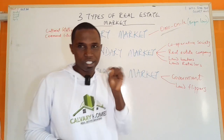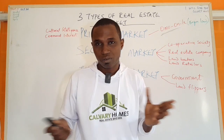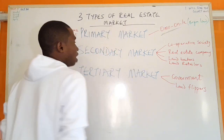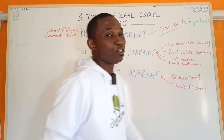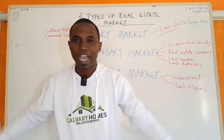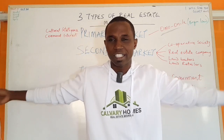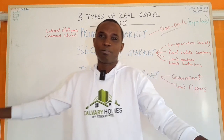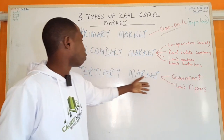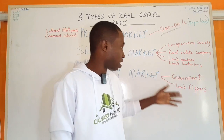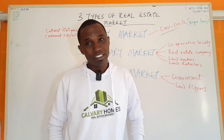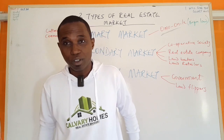So land bankers and land retailers — that's when you are buying from the secondary markets. The last market is the tertiary market. That's when you buy from the government. Those are the plots — buying a plot for 30 million, 25 million, 40 million — those are plots you are buying from the tertiary markets.